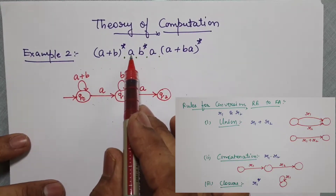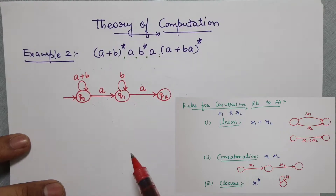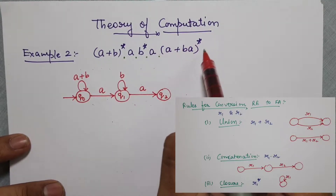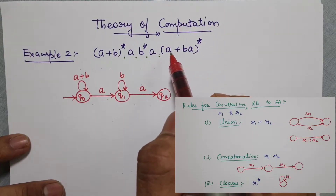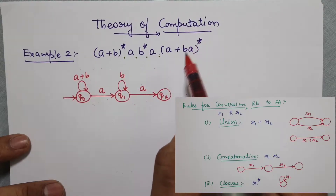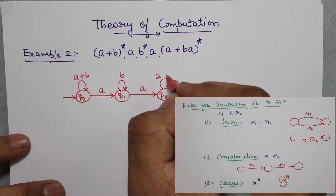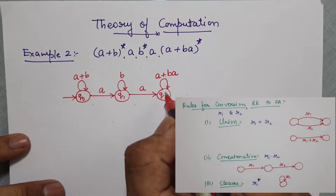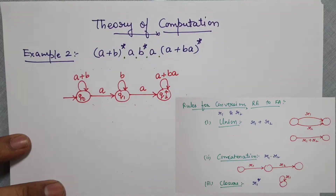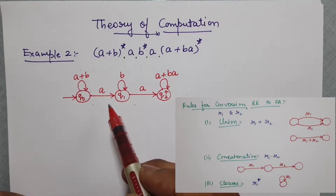So this is (a+b)*, this is a, then this is b*, and this is a again. Now here also it is (a+ba)* — so it will be a+ba — and this will be my final state.